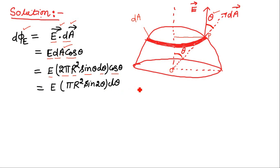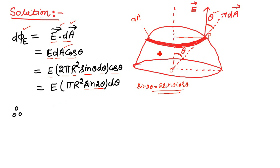We use the trigonometric identity sin2θ = 2 sinθ cosθ, and the expression for dΦ simplifies accordingly. To find the total flux through the hemispherical surface, we must integrate dΦ over the whole surface area. The hemisphere has its smallest strip at point A, where the line OP coincides with OA.